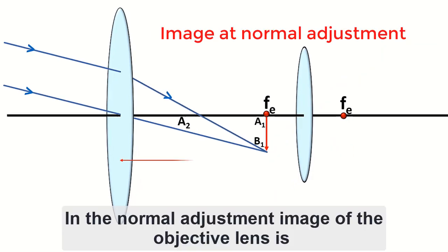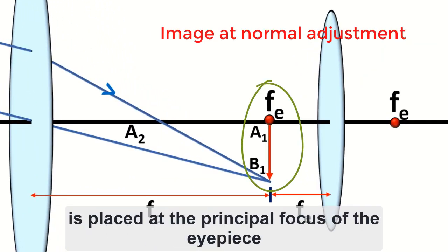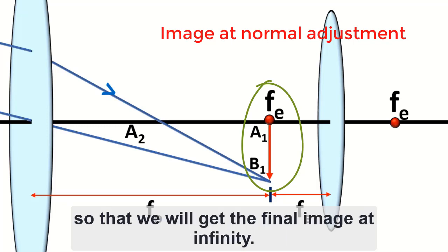In the normal adjustment, image of the objective lens is placed at the principal focus of the eyepiece, so that we will get the final image at infinity.